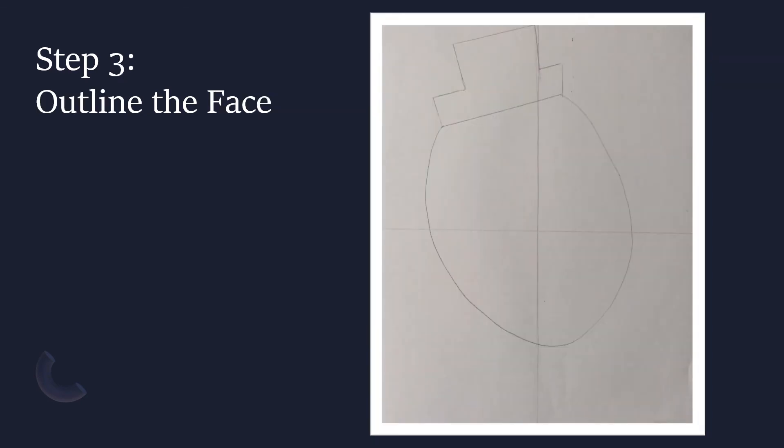Step three: next we're going to draw the face shape. It should be an oval shape that starts and finishes at each corner of the hat. It should be large enough to span all four sections of your paper.